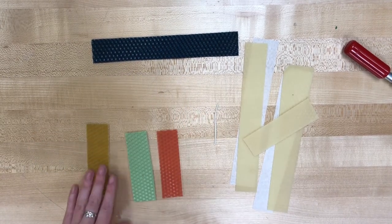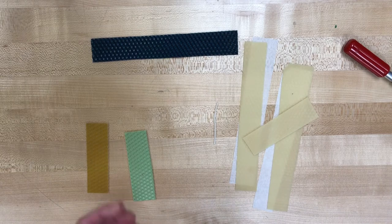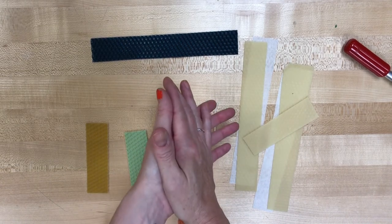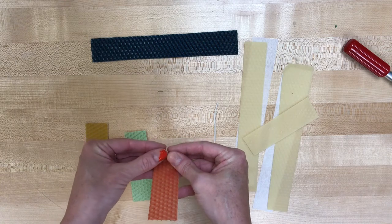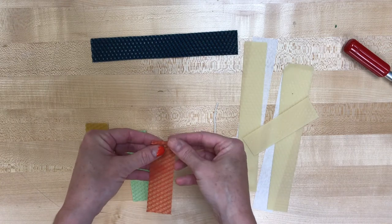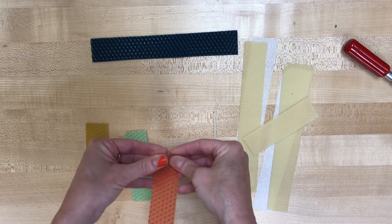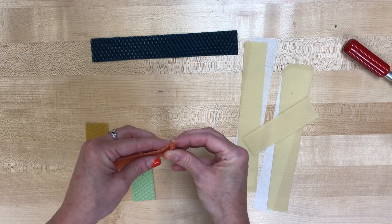We're going to start with the smaller pieces. I'm starting with red. I'm going to warm it up in my hands just enough so that it bends and doesn't break. Then we're going to start curling it into a roll shape.